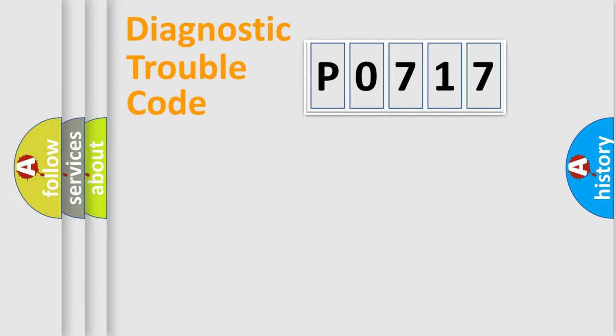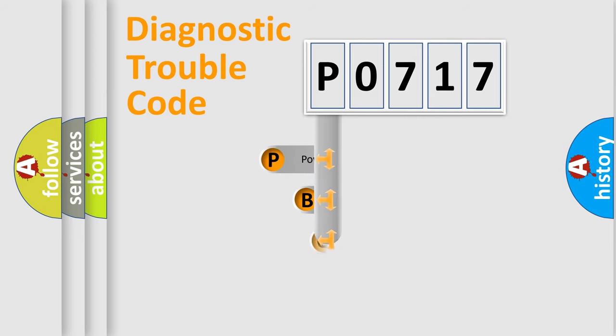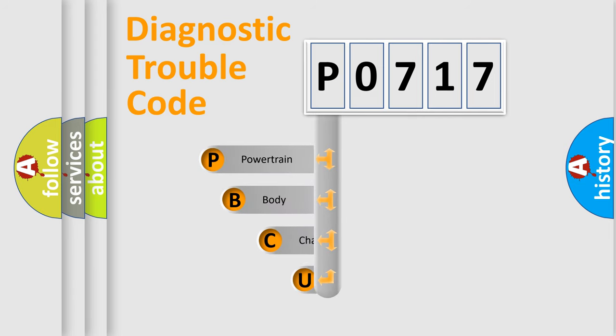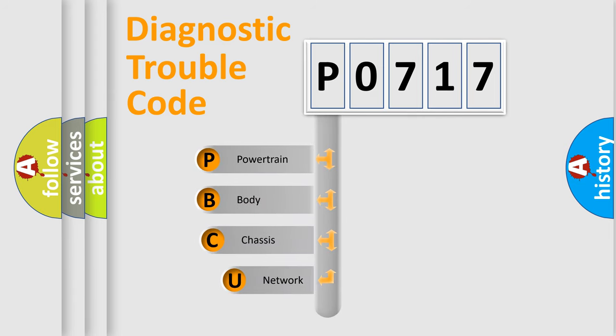Let's do this. First, let's look at the history of diagnostic fault code composition according to the OBD2 protocol, which is unified for all automakers since 2000. We divide the electric system of an automobile into four basic units.